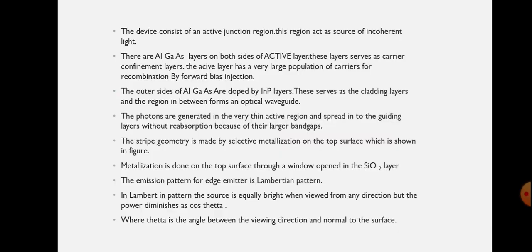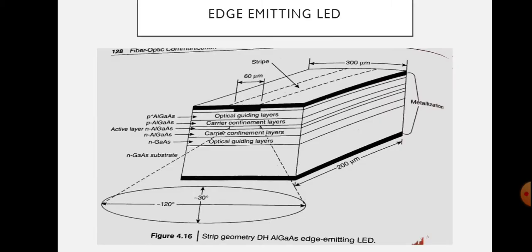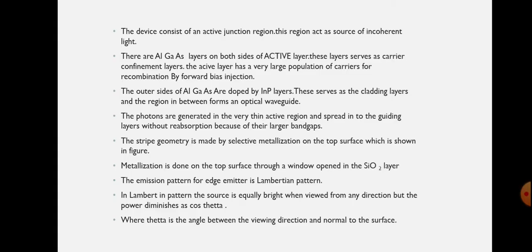The device consists of an active injection region, and this region acts as the source of incoherent light. This forms a PN junction and the light will be emitted from this region, producing incoherent light — meaning the light will be out of phase.